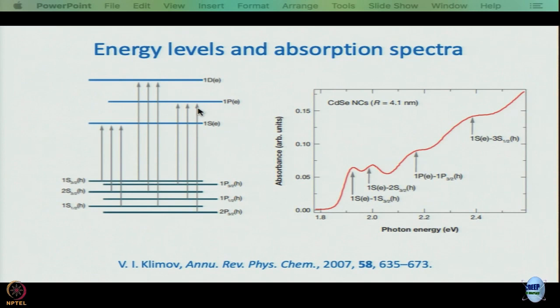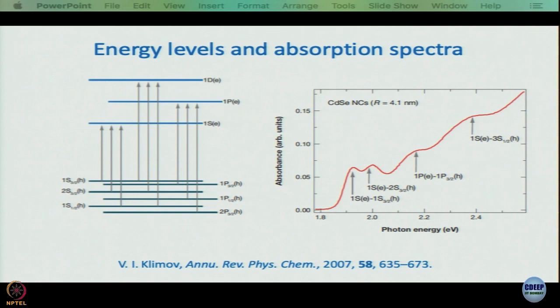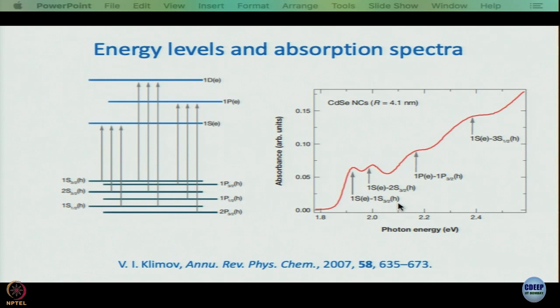If another transition is involved — say 2P(3/2) hole and 1P electron — the energy gap is larger, so it appears at higher energy in the absorption spectrum. The second band is 1Se–2S(3/2) hole, meaning the electron is still in the lowest conduction band state but the hole is at a deeper level, giving a larger energy gap.